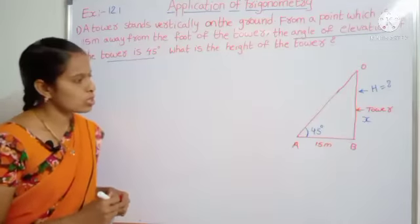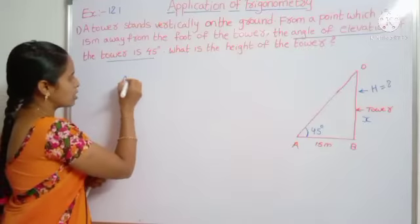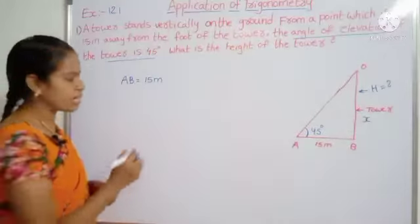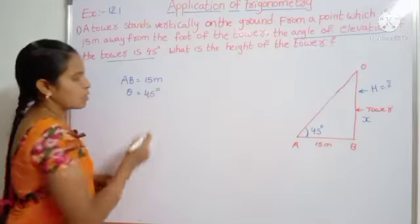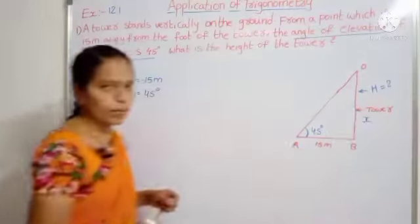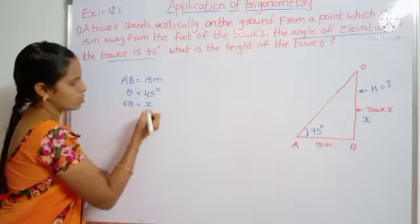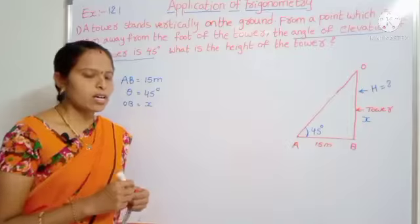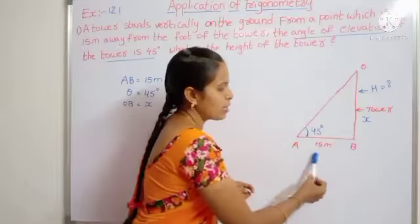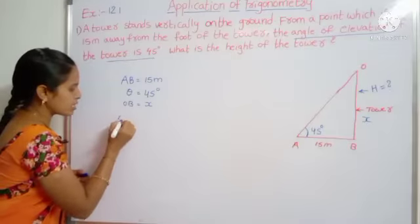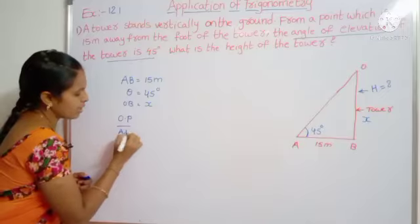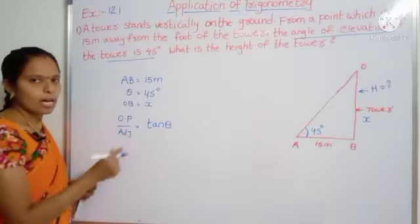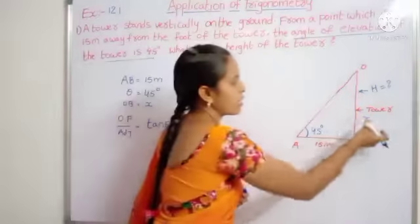First, note down the given values. AB equal to 50 meters, and angle theta equal to 45 degrees. OB equal to X — we don't know about OB. We already know the formula: sin theta, cos theta, and tan theta. Here the given values are opposite side and adjacent side, so the formula is opposite side by adjacent side equal to tan theta.